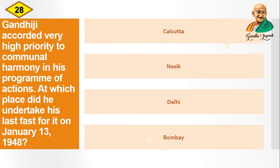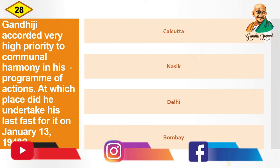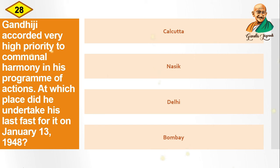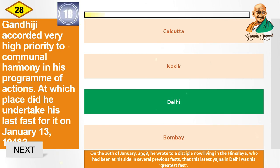Question: Gandhiji accorded very high priority to communal harmony. At which place did he undertake his last fast for it on January 13, 1948? Options are: Kolkata, Nasik, Delhi, Bombay. The correct answer is Delhi. On 16th January 1948, he wrote to a disciple that his latest yajna in Delhi was his greatest fast.